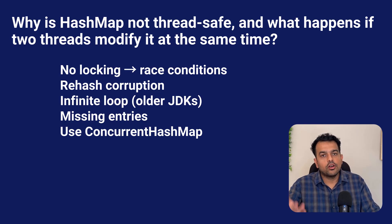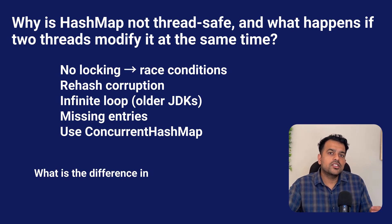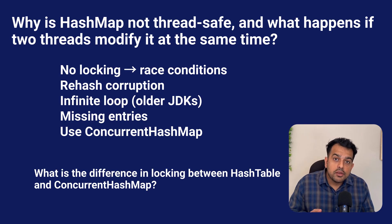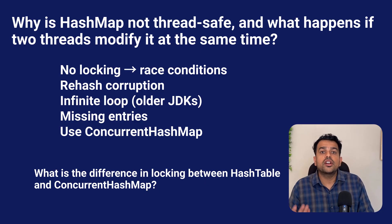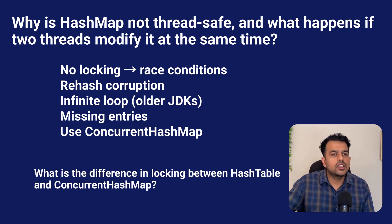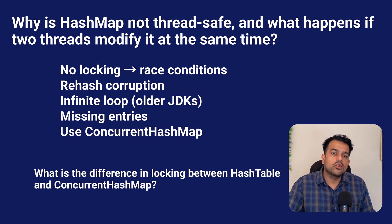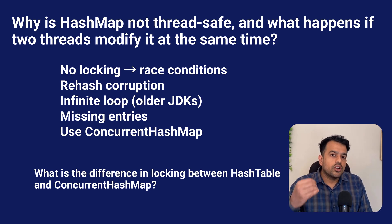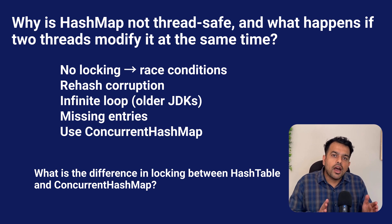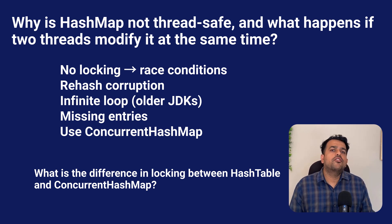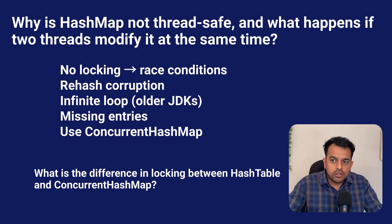There would be a follow-up question they might ask: what is the difference in locking between HashTable and ConcurrentHashMap? HashTable locks the entire object, which is why it is very slow. But ConcurrentHashMap locks only the part of the map required for the operation, which is why it is much faster.